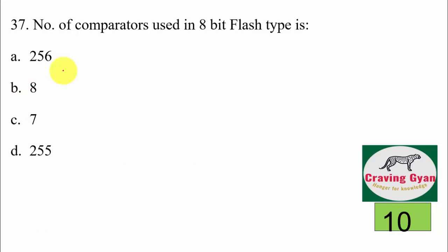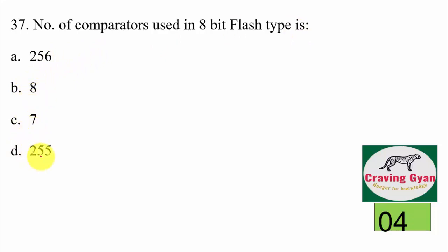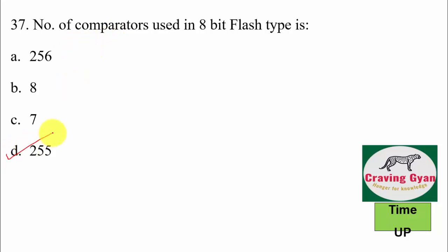37th question: number of comparators used in an 8-bit flash type ADC — 256, 8, 7, or 255? The number of comparators required equals 2ⁿ − 1. For n=8, that is 2⁸ − 1 = 256 − 1 = 255. Hence option D is correct.